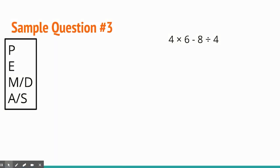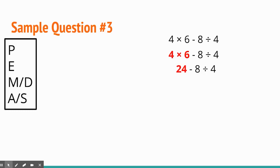Now we have a problem with both multiplication and addition/subtraction: 4 times 6 minus 8 divided by 4. No parentheses, no exponents, but we do have multiplication and division. Starting left to right, 4 times 6 comes first, giving us 24 minus 8 divided by 4. Next, we do the division: 8 divided by 4 is 2. Then 24 minus 2 gives us 22. We do not do 24 minus 8 first — that's the key.